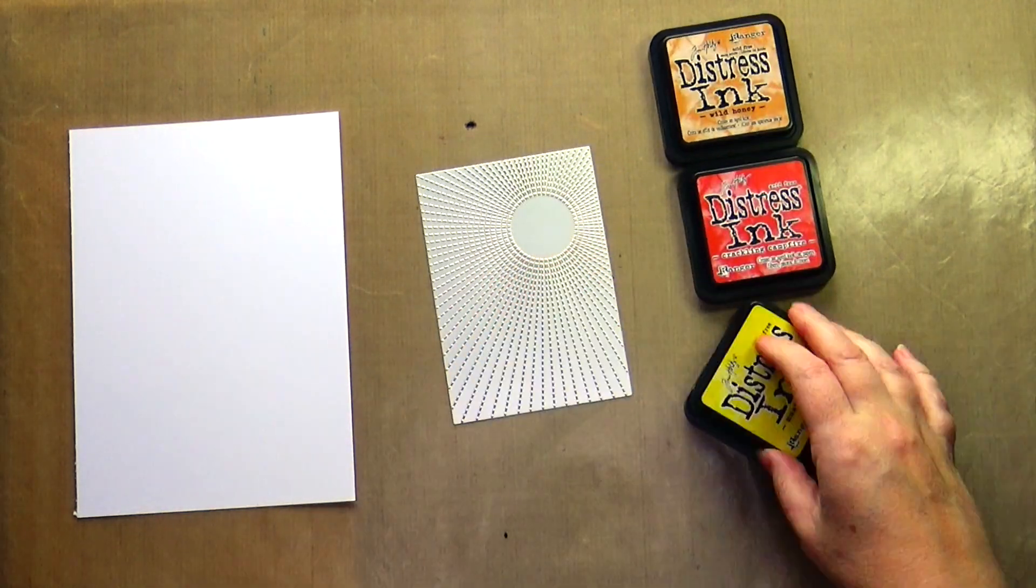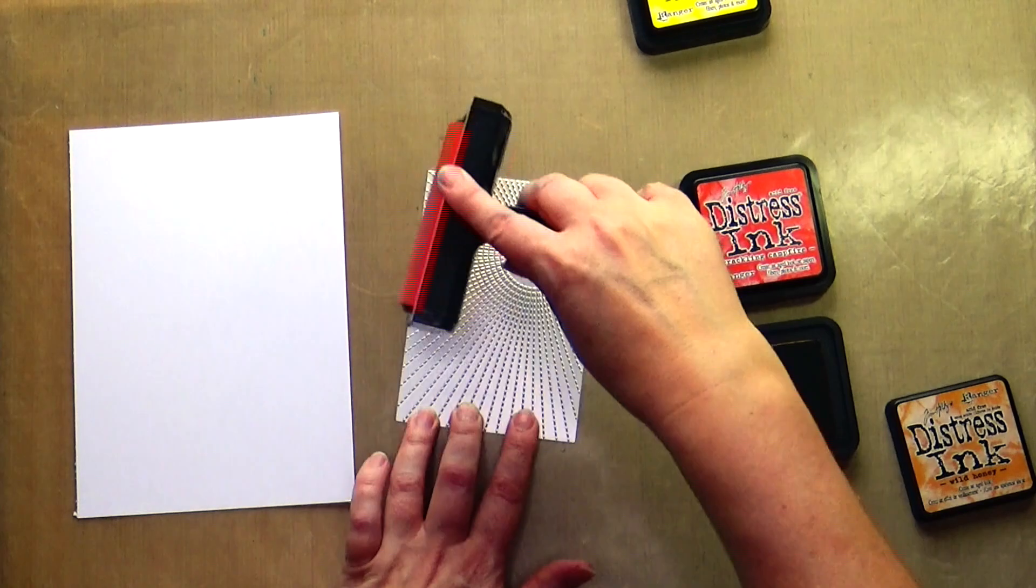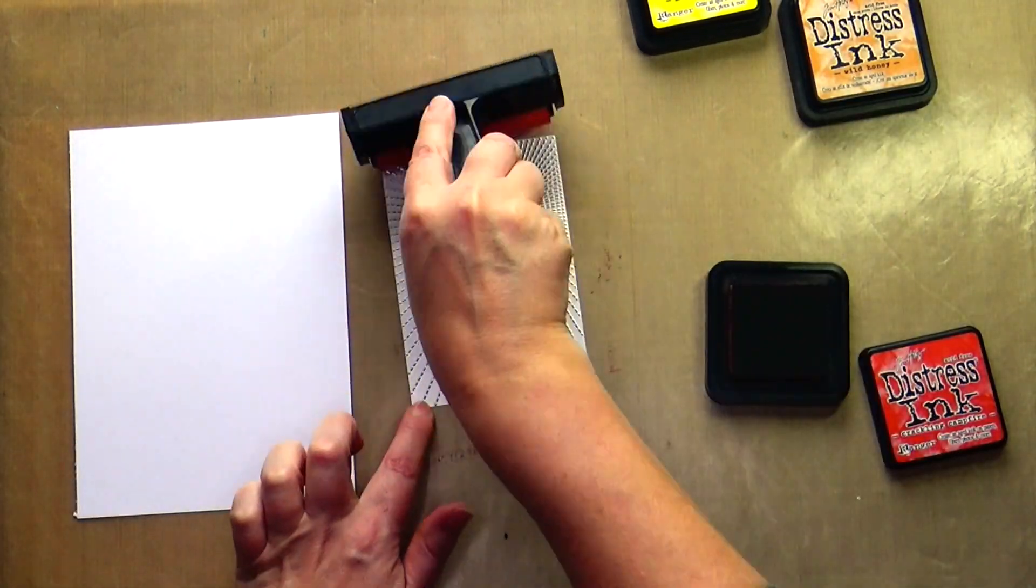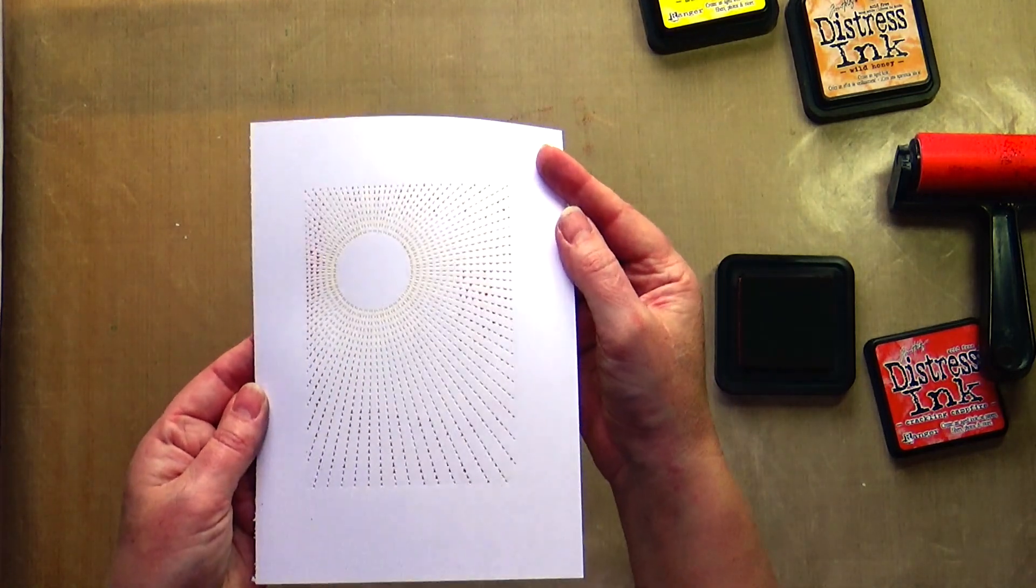For a subtle extra effect you can color the patterns plate with ink and a brayer first. Die cut with your die cutting machine. You will now see that the imprint has a color.